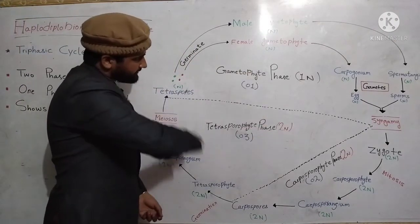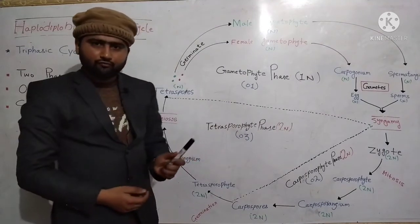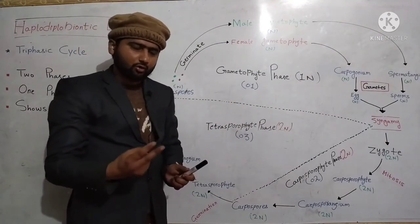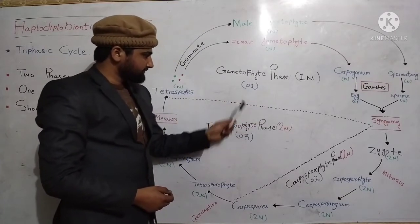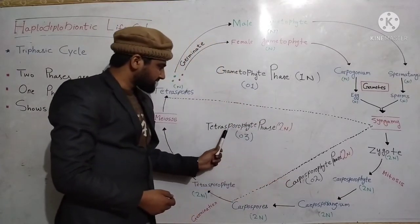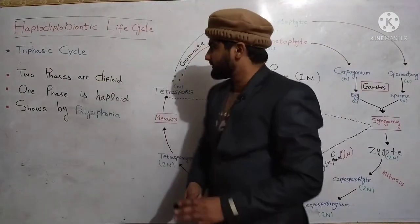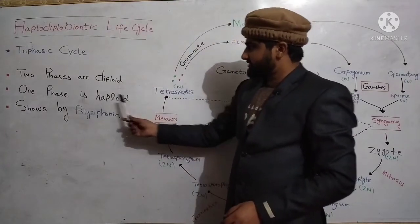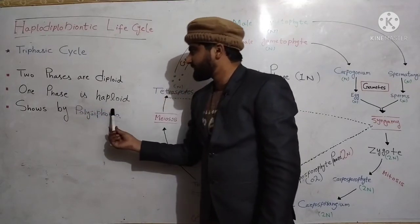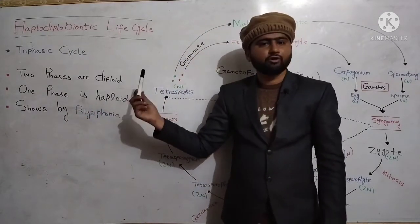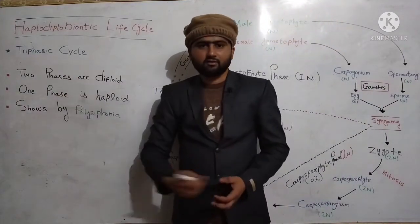In this life cycle, there are three phases, out of which two are diploid and one phase is haploid. The gametophytic phase is haploid, and the carposporophyte and tetrasporophyte phases are diploid. According to definition, a life cycle in which two phases are diploid and one phase is haploid is called a haplodiplobiontic life cycle. It is also called a triphasic life cycle.